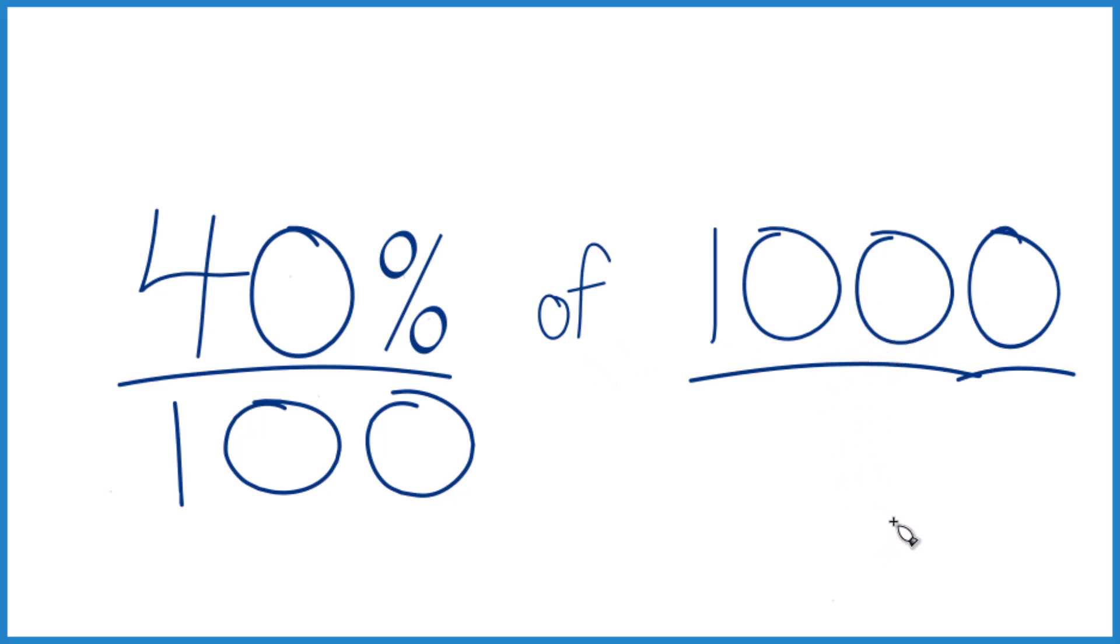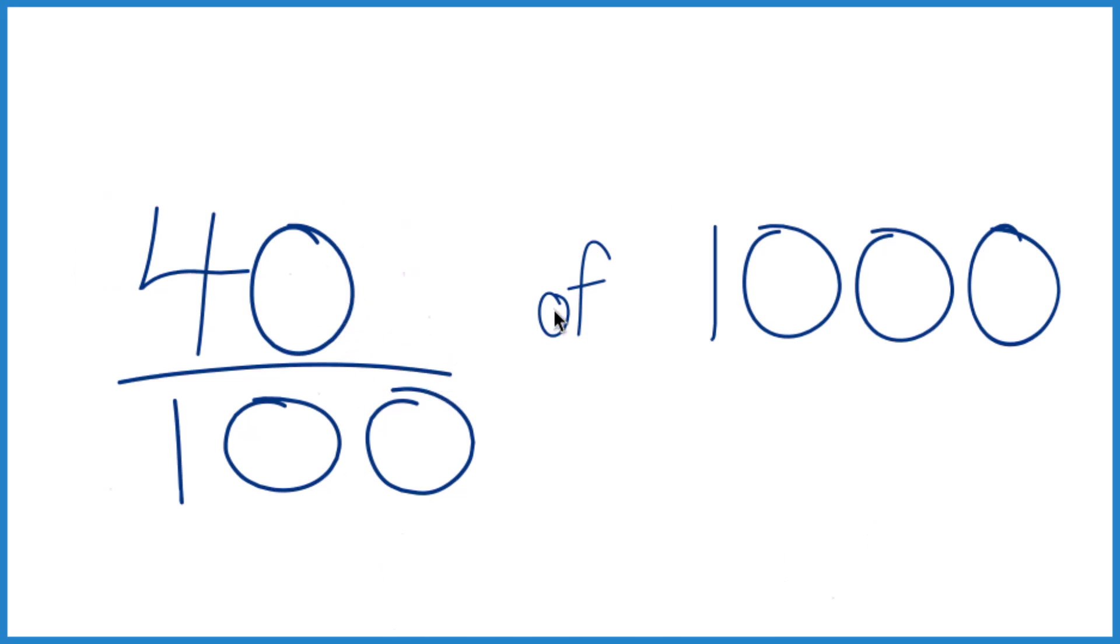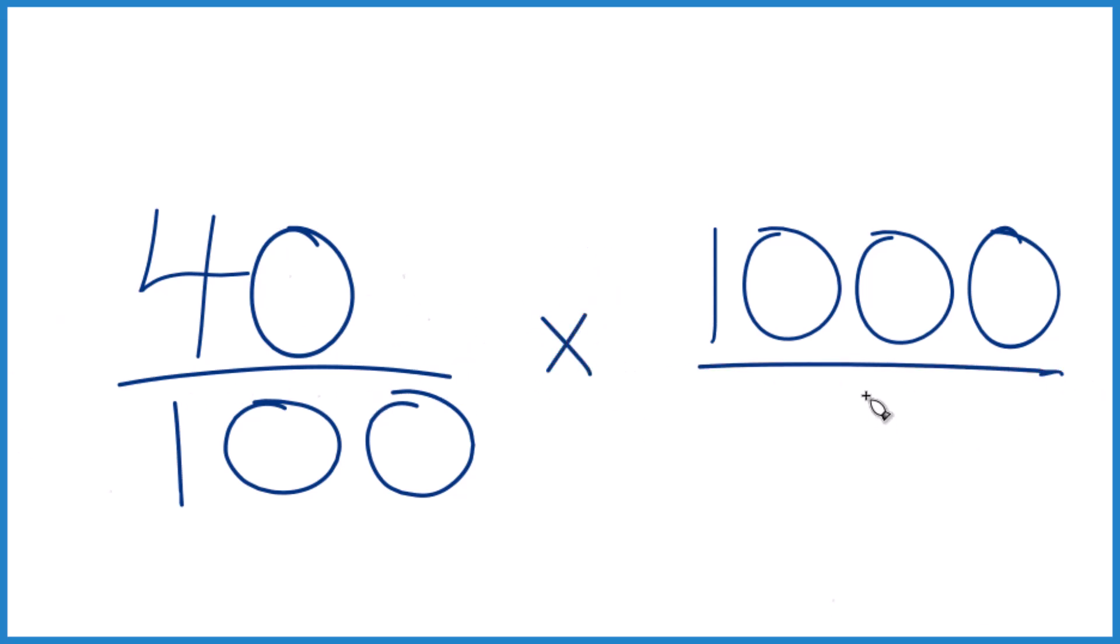Here's another way you can do it. We said 40% is 40 per 100. And of, let's just call that multiplication here. And let's put it 1,000 over 1. It's still 1,000, but everything lines up nice.